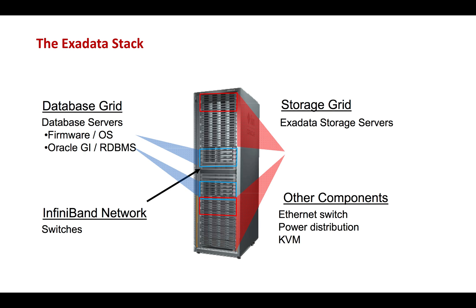It also gives you different features of offloading, also called smart scans, and we also have something called storage indexes. Each cell contains 12 physical disks, and each physical disk is further divided into cell disks, grid disks, and ASM disks.